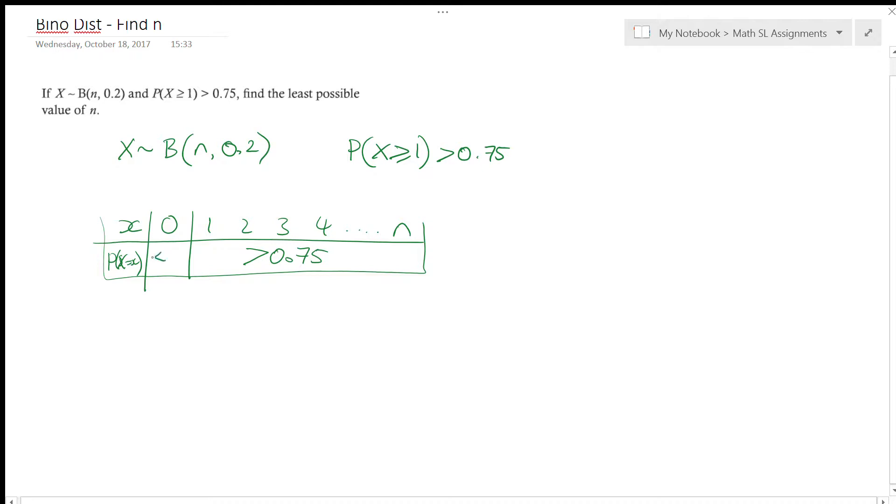then this one here must be less than or equal to 0.25. So really what I'm looking for is I'm saying the probability that x is equal to 0 must be less than or equal to 0.25. So now I've got something I can work with.